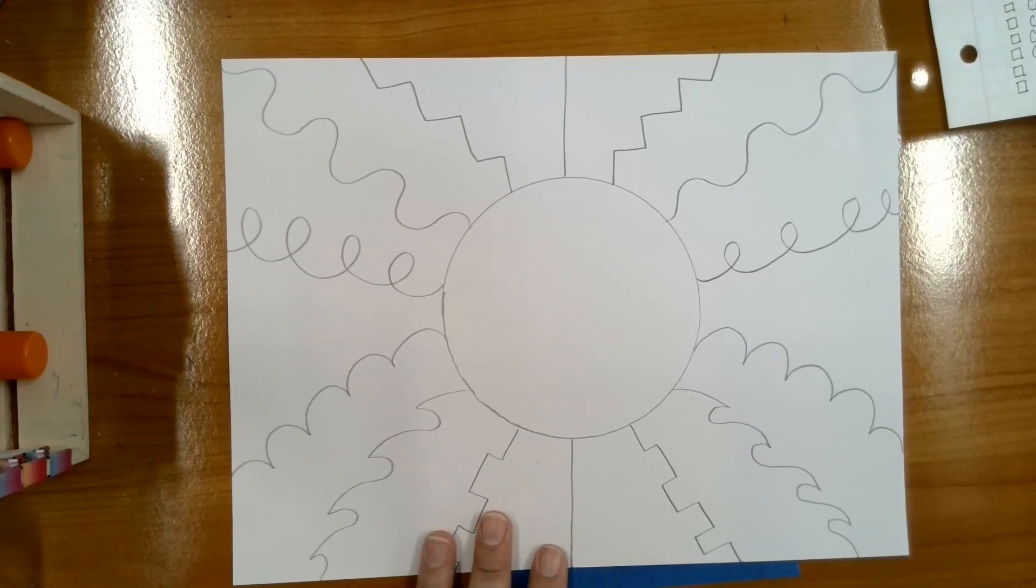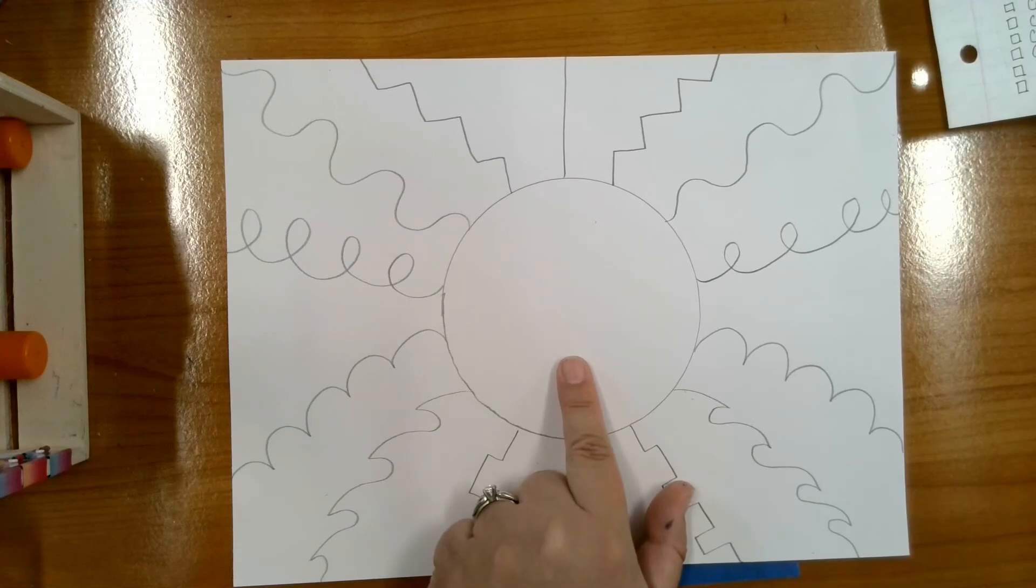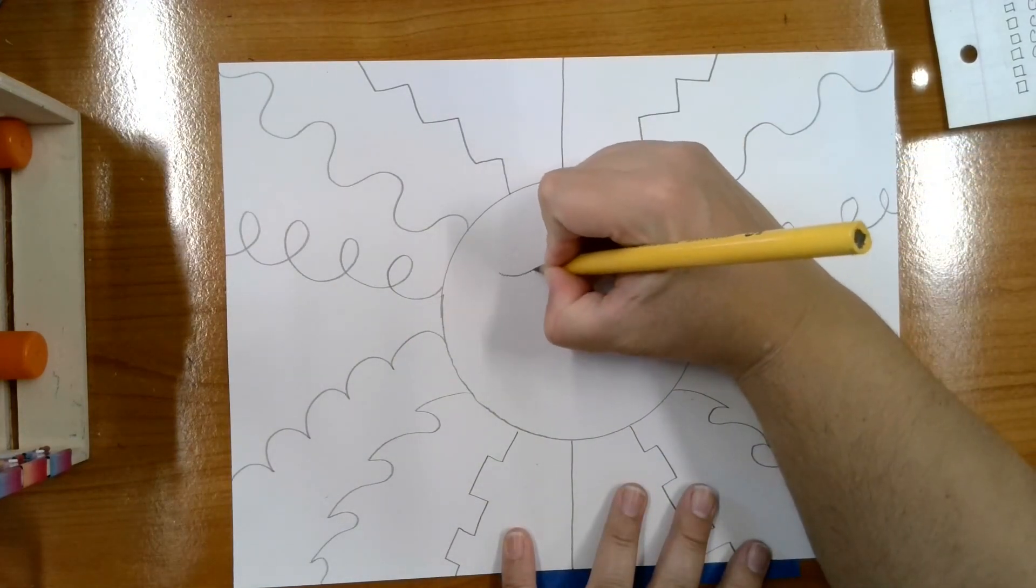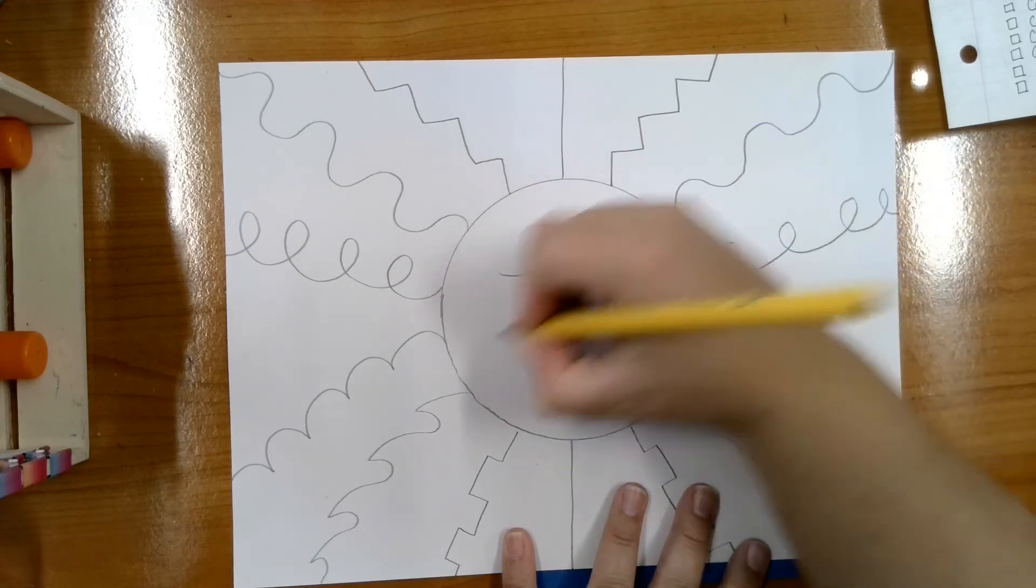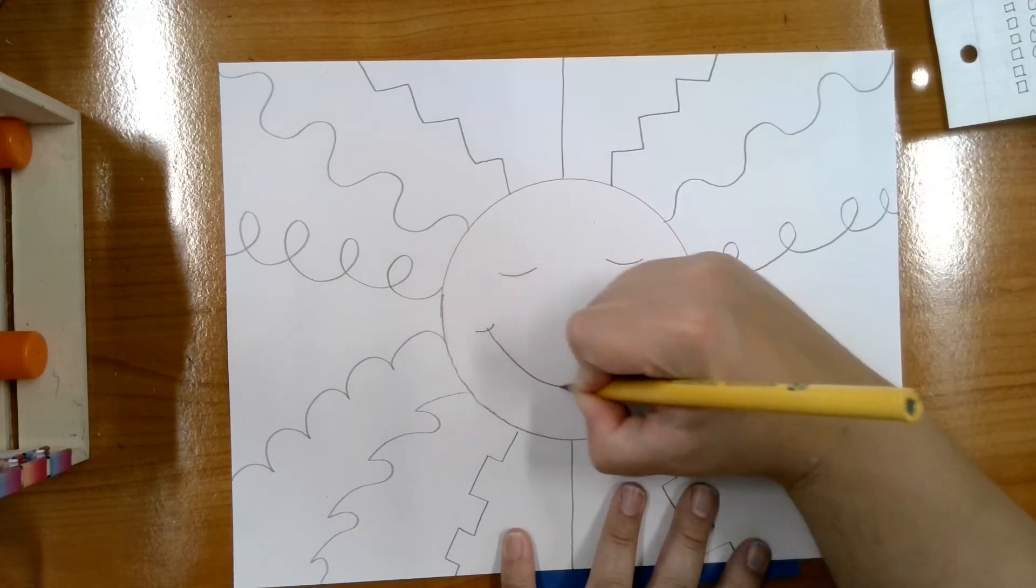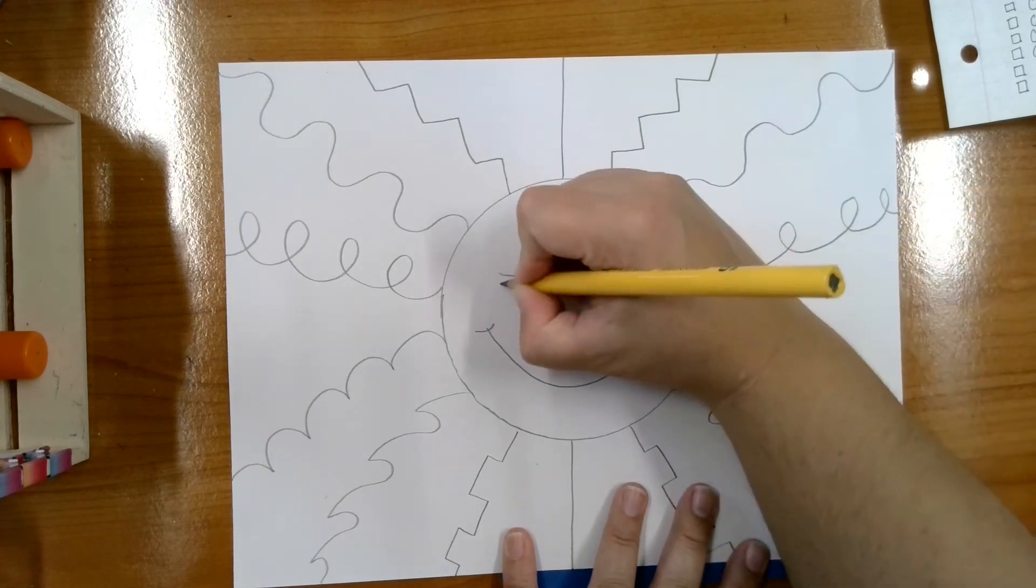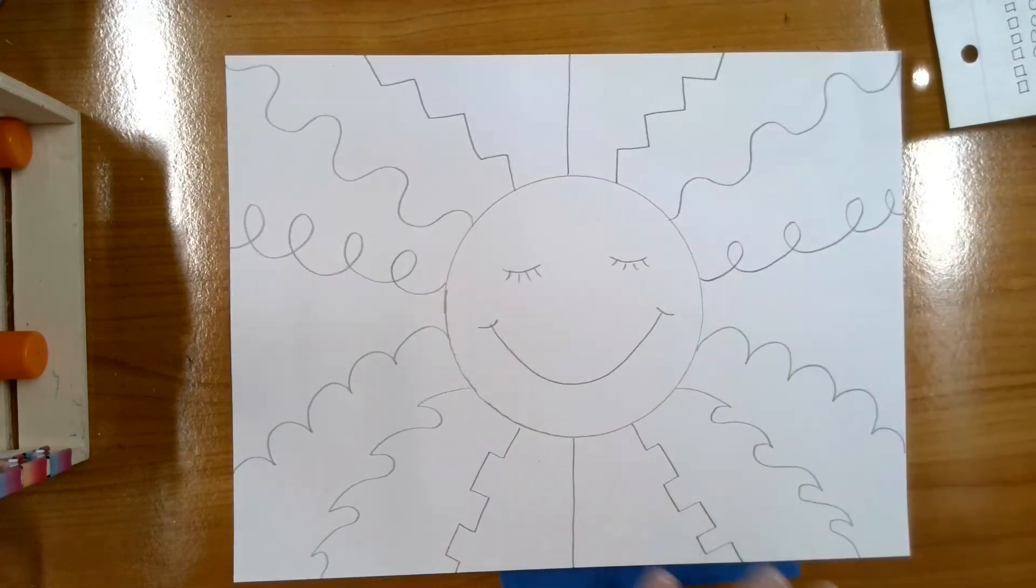Now, when you're all done, I want you to draw a face inside your sun, however you want. I'm going to have a happy little smile. You can make yours different.